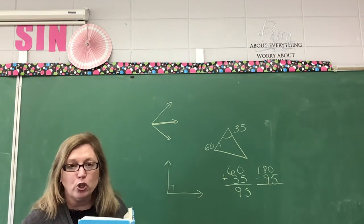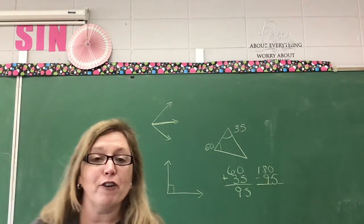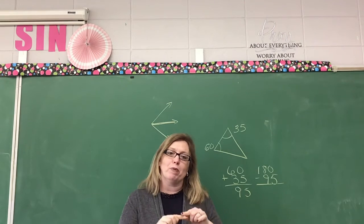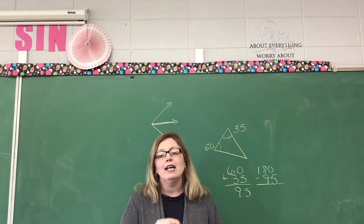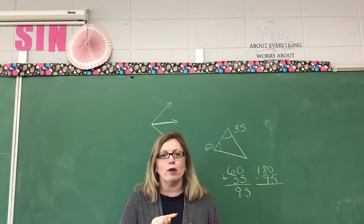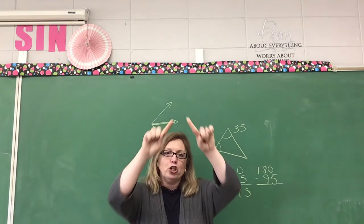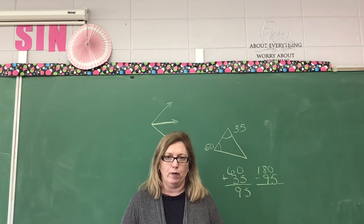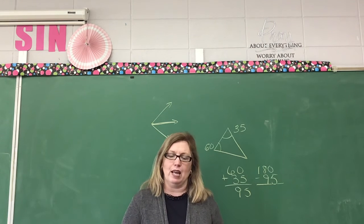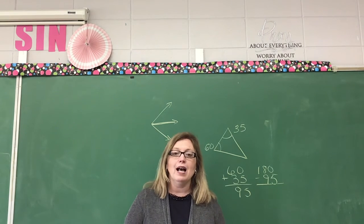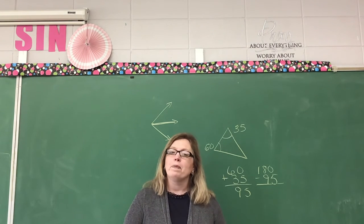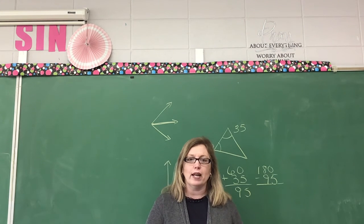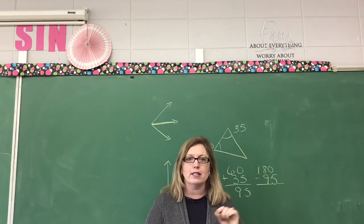There are several different kinds of triangles. Triangles that have the same measurement on every side are called equilateral. If two sides are the same, it is called a scalene triangle. If none of the sides are the same, we call it an isosceles. Then there's one that has an angle that measures 90 degrees — that is called a right triangle.